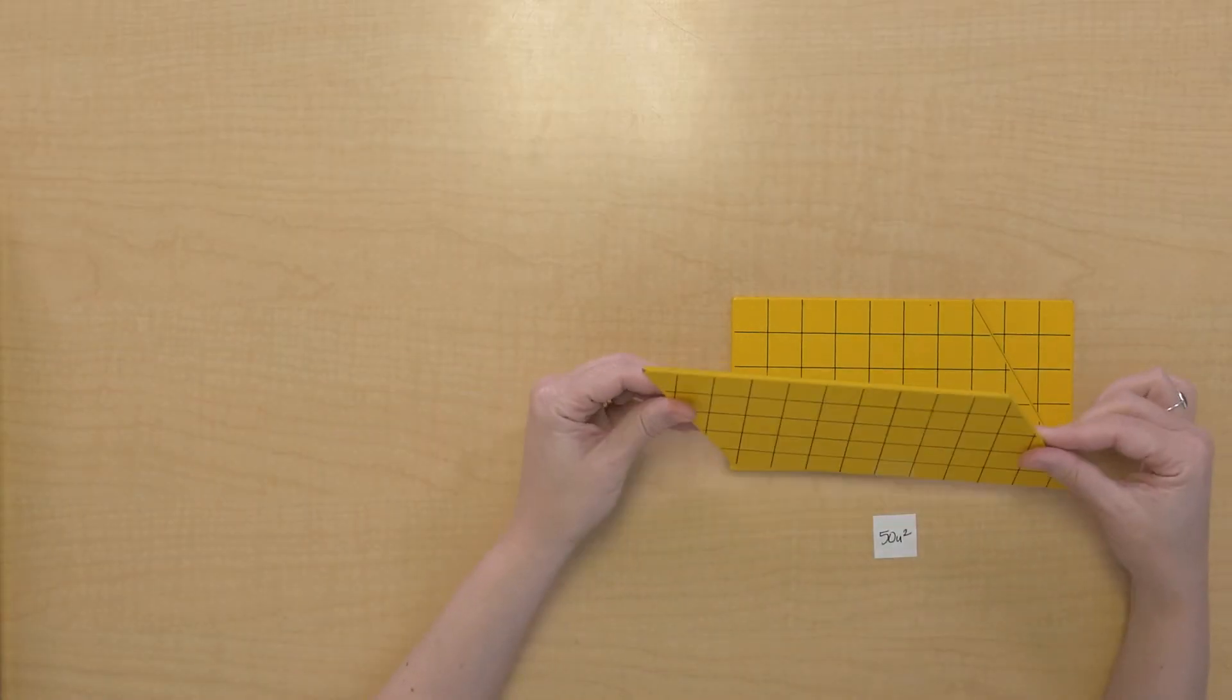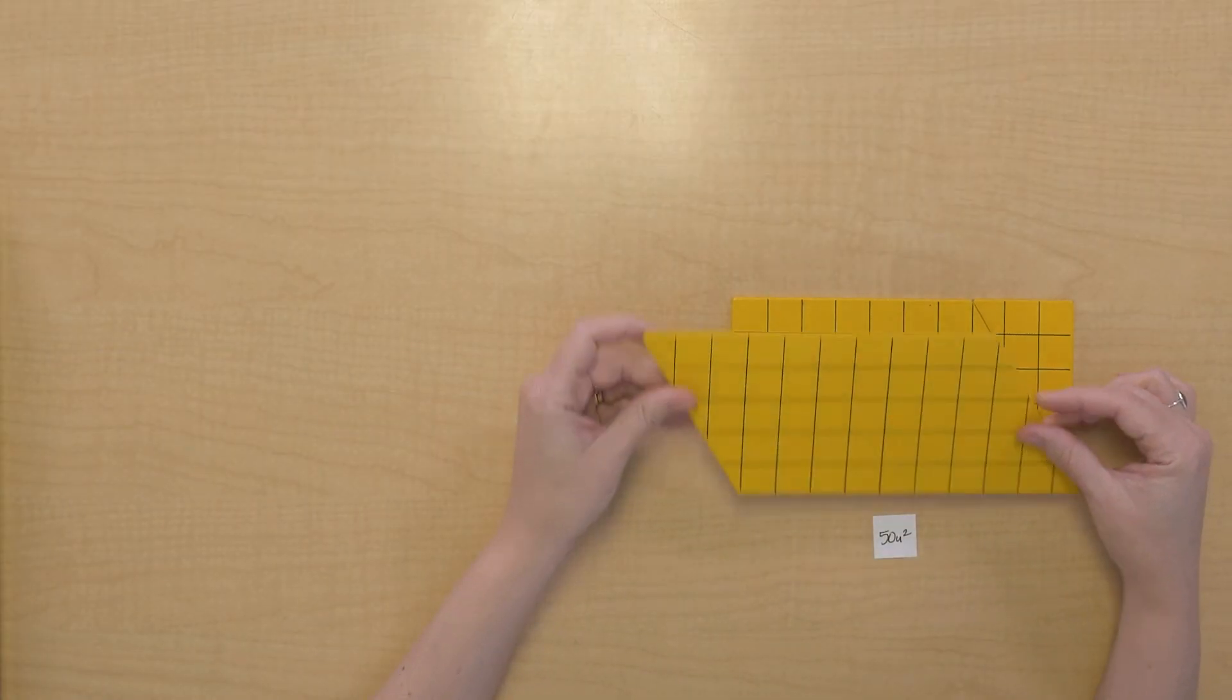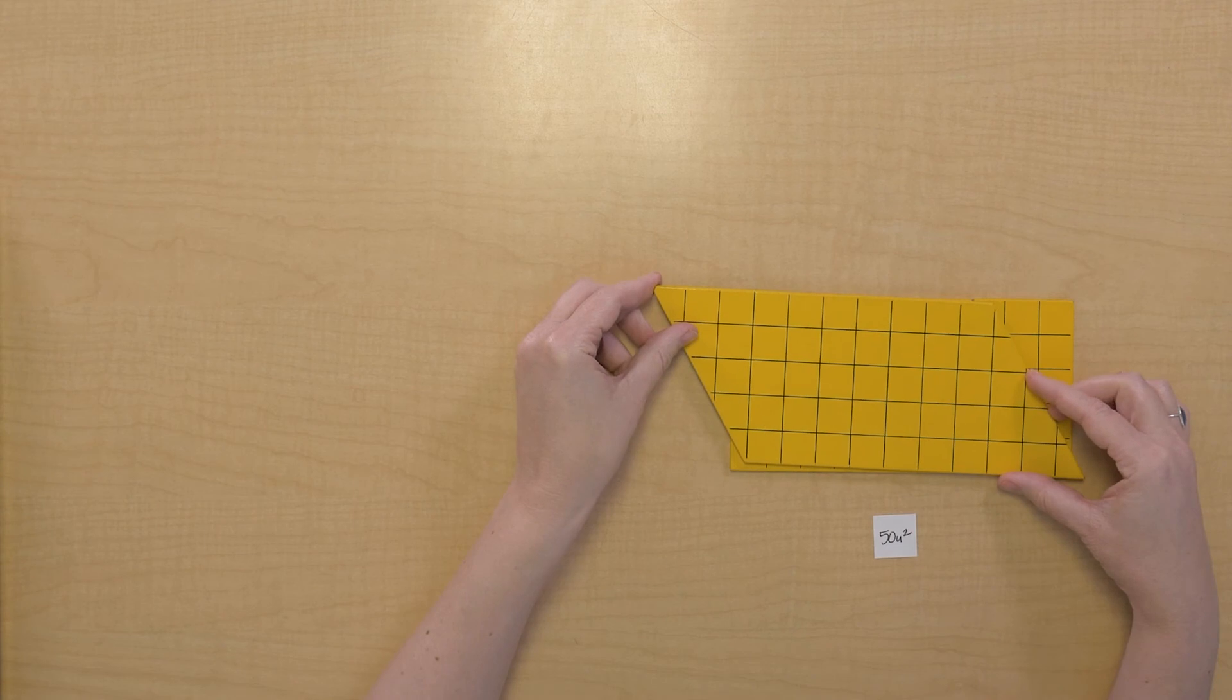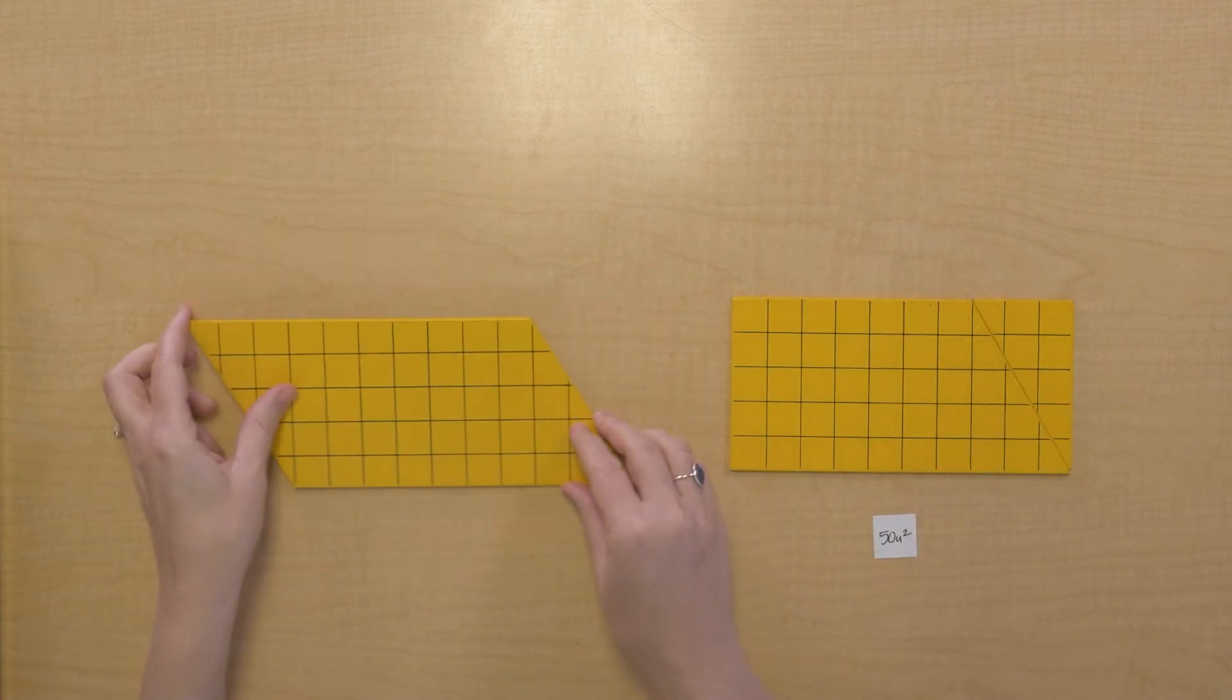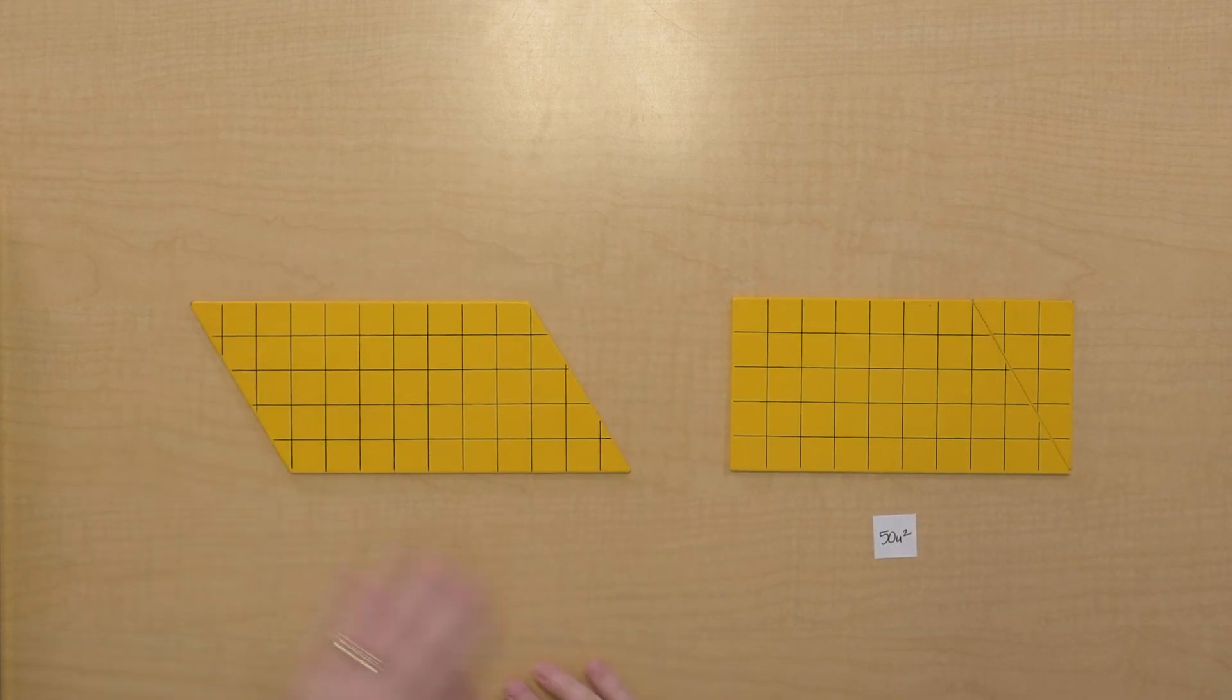What do you notice about this rectangle and this parallelogram? Look, the bases are the same, the heights are the same. So when the base and the height of a parallelogram and a rectangle are the same, then their area will be the same. I wonder if you can do this with more parallelograms.